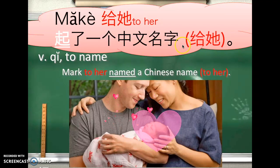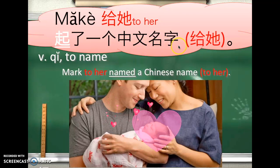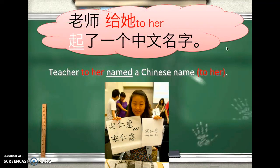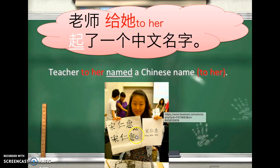马克给他起了一个中文名字. This can also be said as: 马克起了一个中文名字给他. Another example: 老师给他起了一个中文名字.